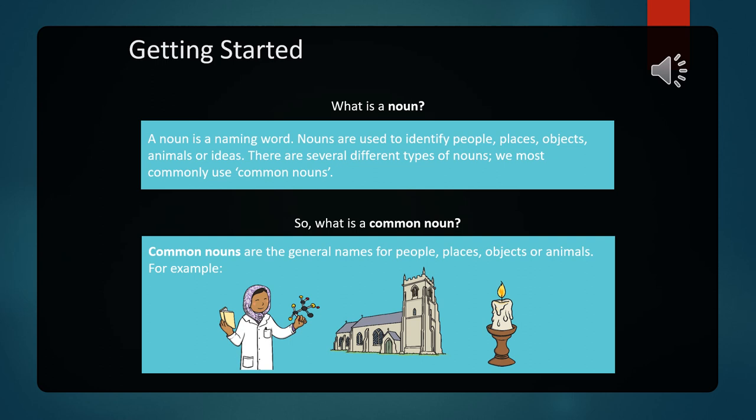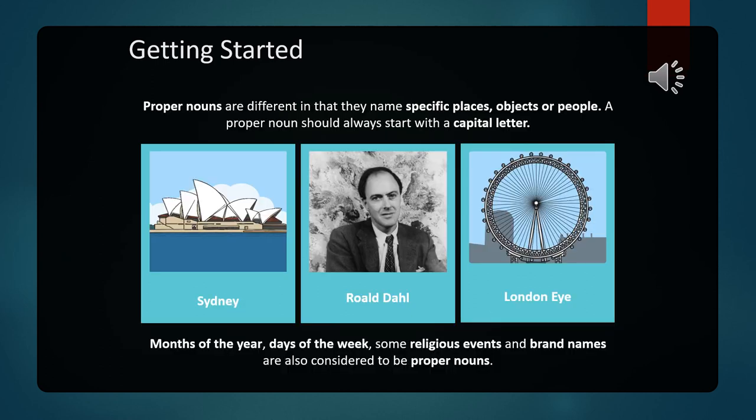We have common nouns and we have proper nouns. When we think about common nouns, we think about places, people, objects, and animals. However, they are general — not specific. They refer to general names of people, places, objects, and animals. We're not specifying anything when we're talking about common nouns, and because it's a general kind of noun, we don't capitalize the words.